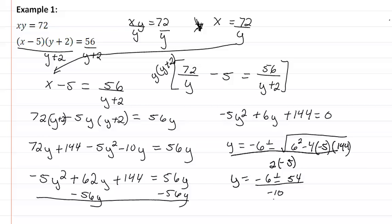And so we're going to get that y is equal to, we have negative 6 and a negative 54 which would give us a negative 60. Negative 60 divided by 10 is going to be 6.